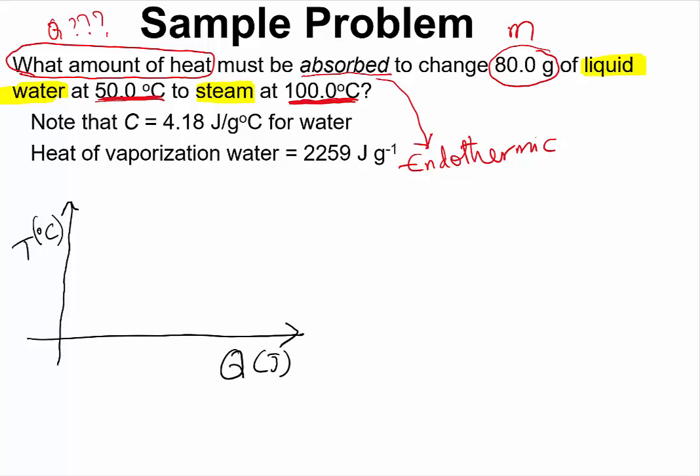For this problem we have liquid water initially at a temperature of 50.0 degrees Celsius. So somewhere here, 50.0 degrees Celsius, that is the liquid water. And we want to change it to steam. So if we supply energy to the liquid water, the temperature will increase until the temperature reaches 100.0 degrees Celsius.